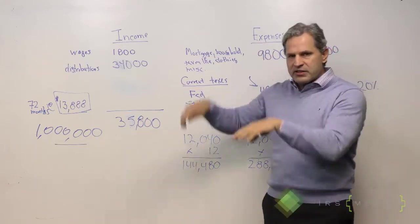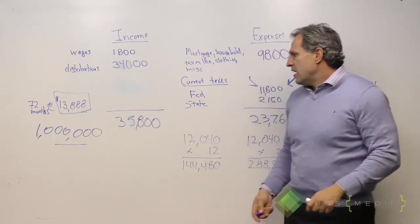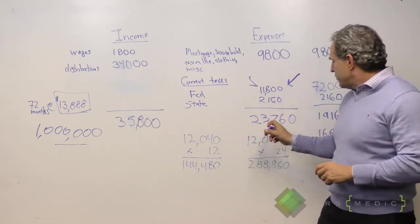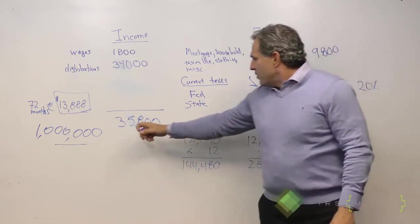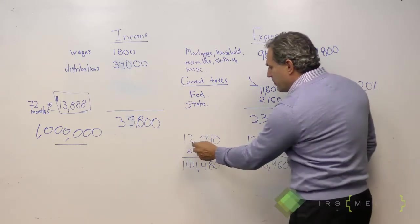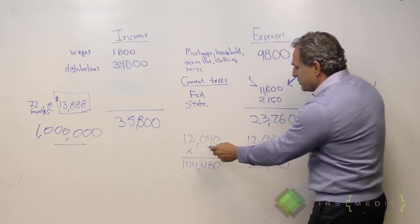He's got a lot of other expenses too, they're just not allowable. If we subtract the $23,760 from $35,800, we come up with a monthly ability to pay of $12,040.